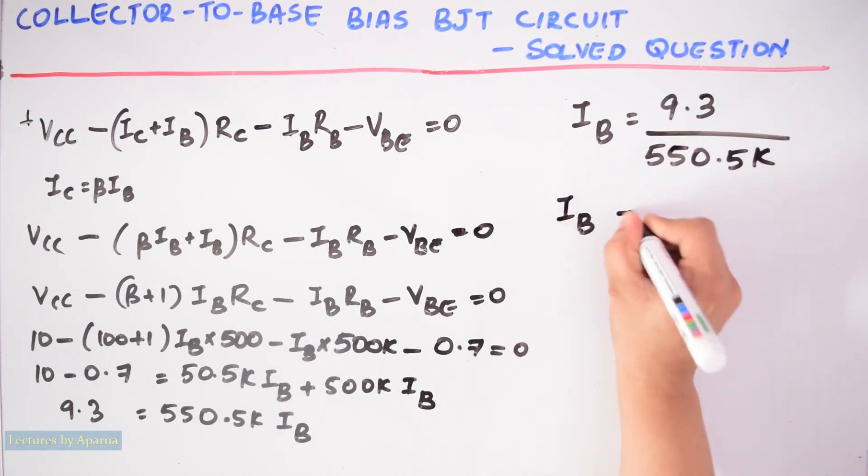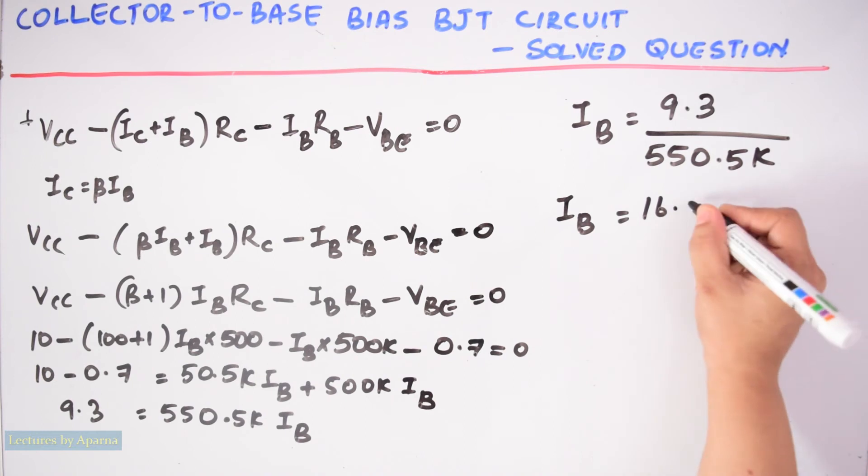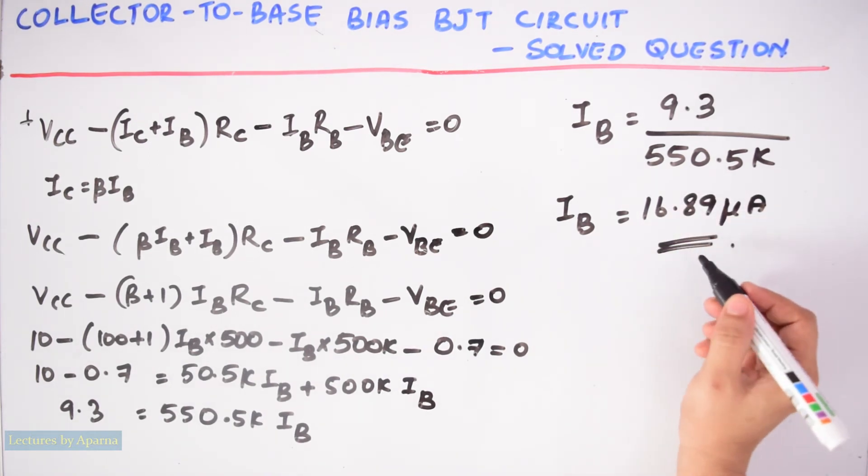IB is equal to 9.3 divided by 550.5k. IB is equal to 16.89 microamperes. So we got IB.